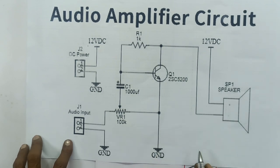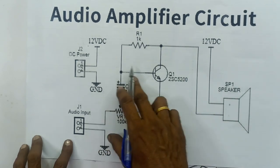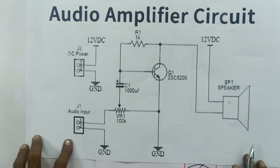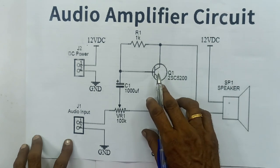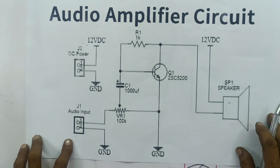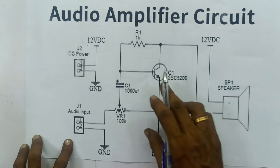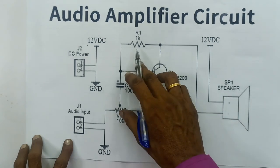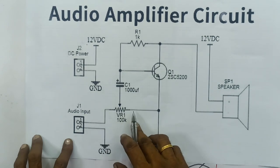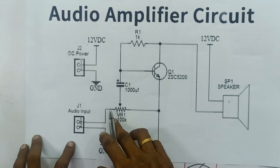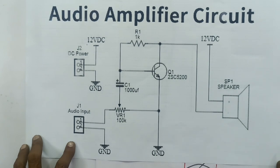If you have any frequency, you will be able to get the output through a full transistor to the speaker. In this case, you will be able to get the bias through a 1K resistance. You will get the hot end, cool end, and center point. If you have the hot end, you will get the audio input. You can use a laptop or mobile.